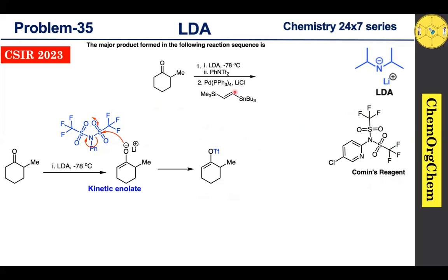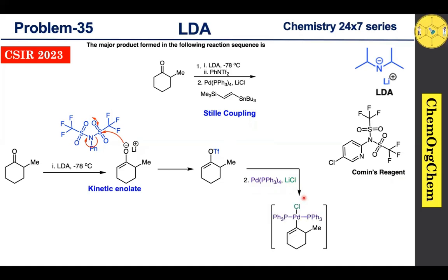The second step involves palladium tetrakis, lithium chloride, and organostannane. Once you see these conditions, most will recognize this as a Stille cross-coupling reaction. According to the Stille cross-coupling mechanism, palladium tetrakis in the presence of lithium chloride first undergoes oxidative addition to produce the corresponding intermediate. This intermediate then reacts with the organostannane, which undergoes transmetalation followed by reductive elimination to produce the corresponding product.